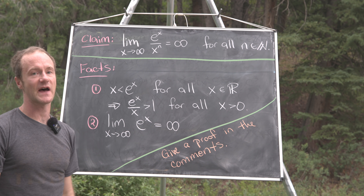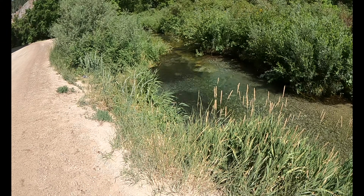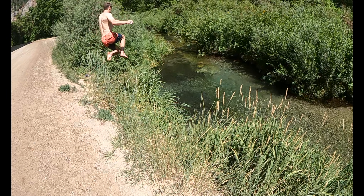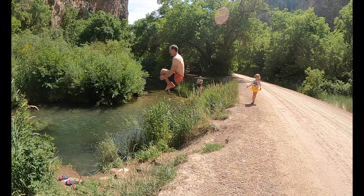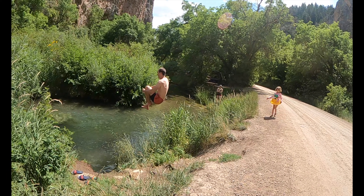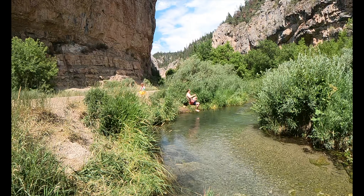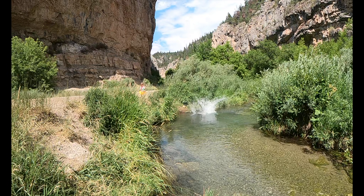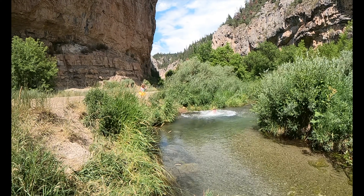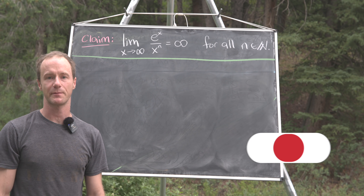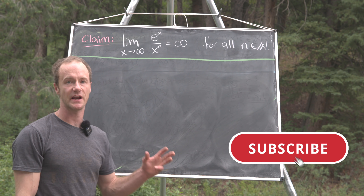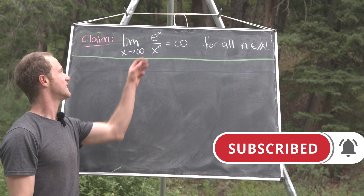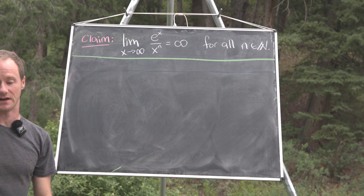Now that we've set up our problem, we're ready to look at a solution. We're ready to show that the limit as x goes to infinity of e to the x over x to the n is infinity.